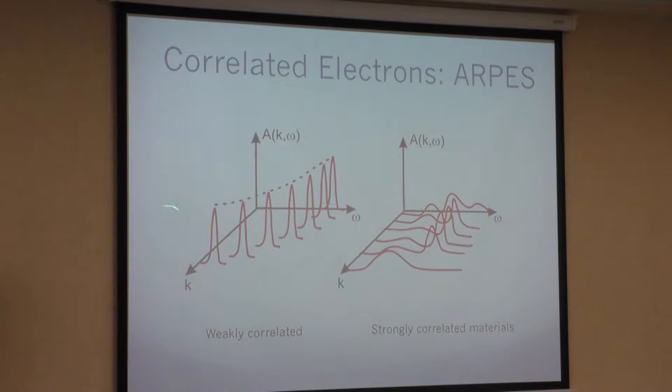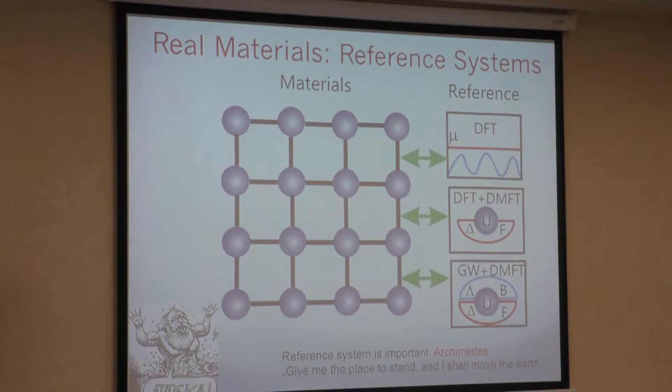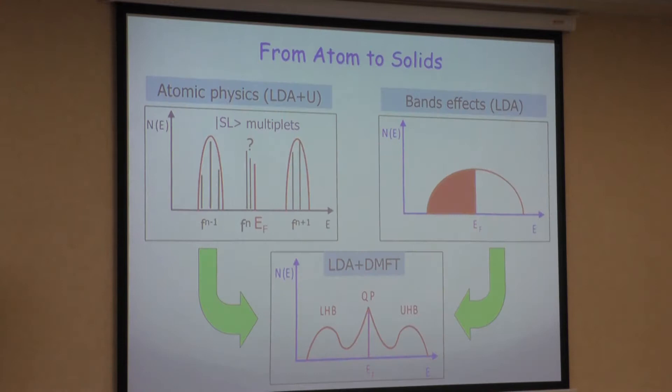We know that weakly correlated metals in photoemission or in the spectral function look simple. But more correlated materials have a large incoherent part. Our strength is that we use different functionals and discuss all these types. We already discussed DFT, and now we discuss the combination of DFT plus DMFT.